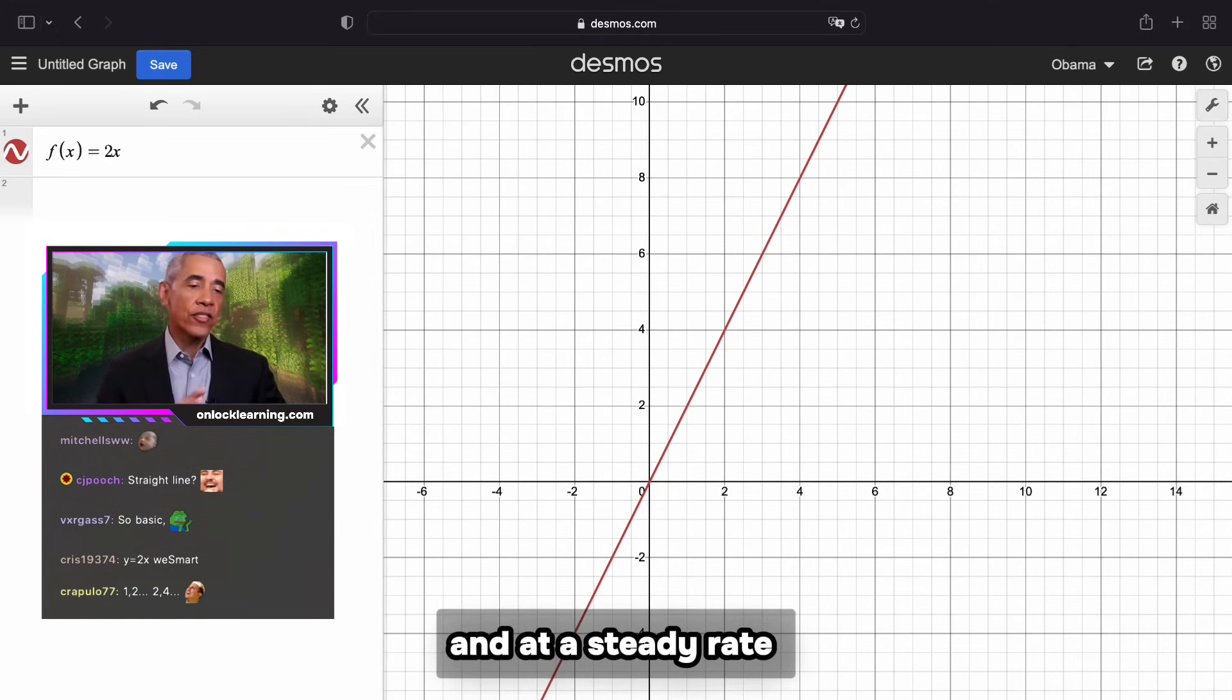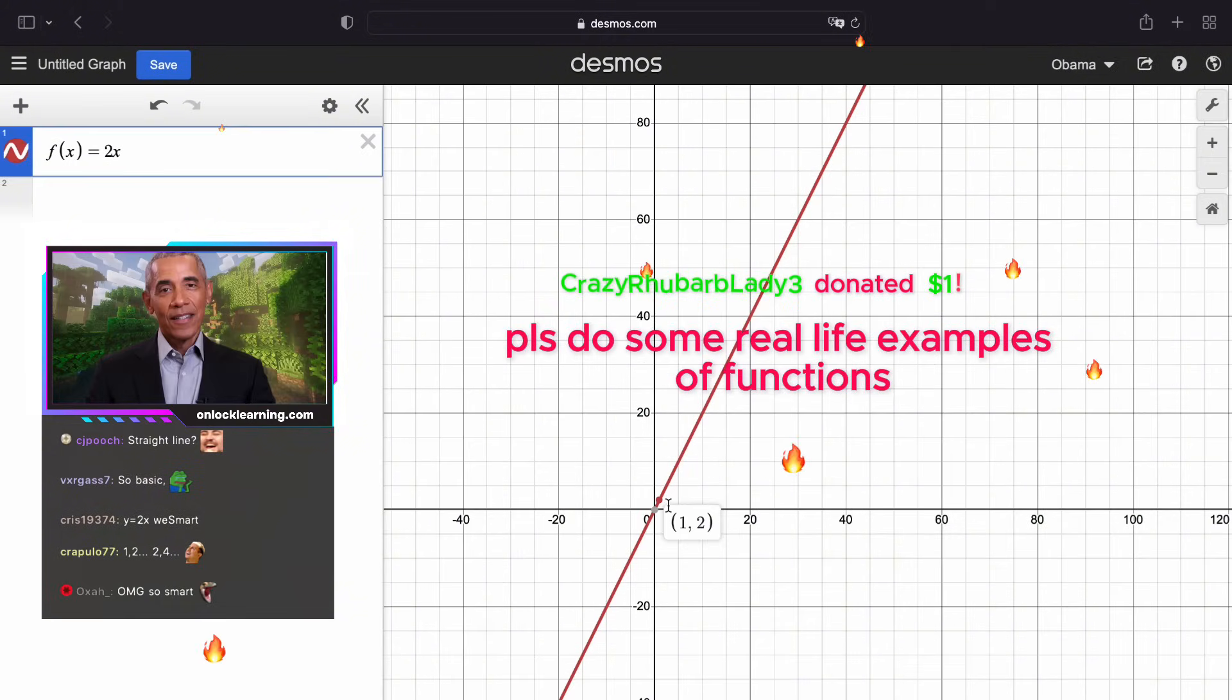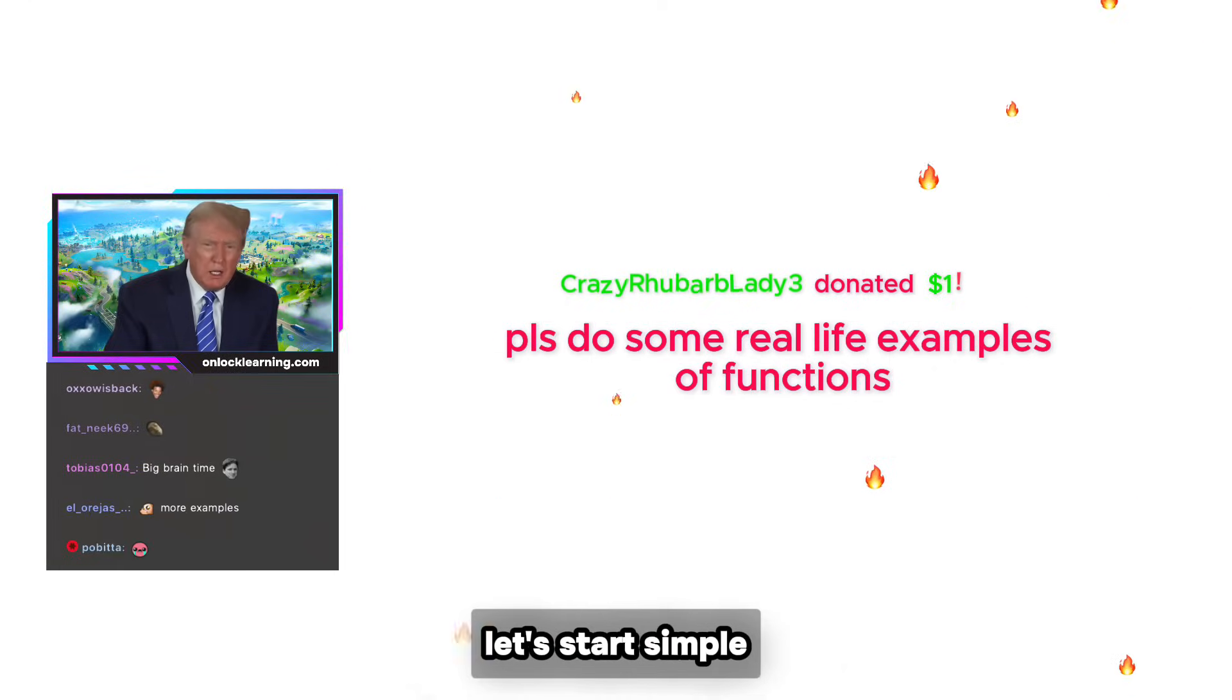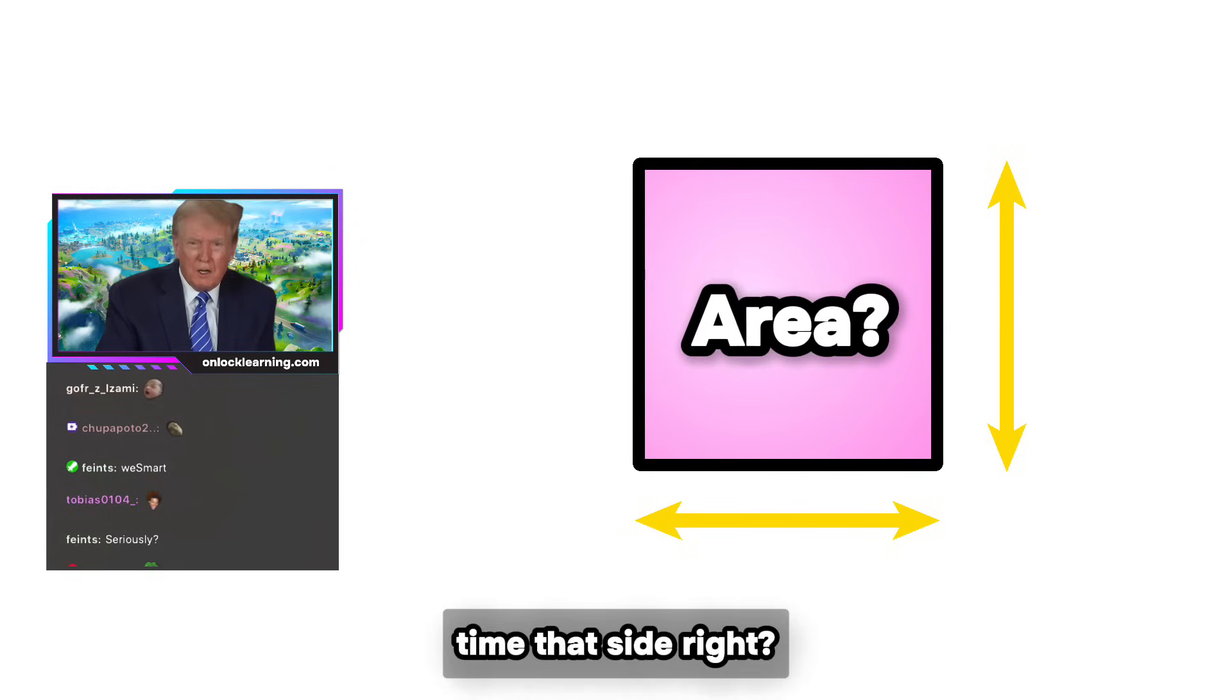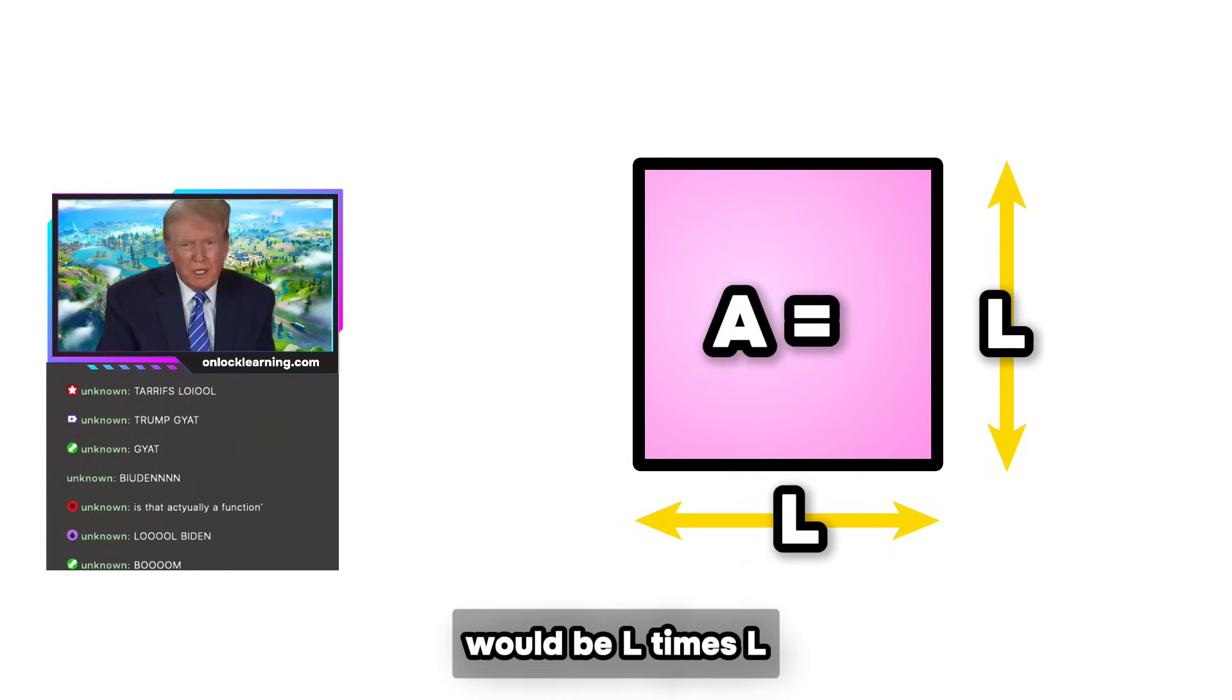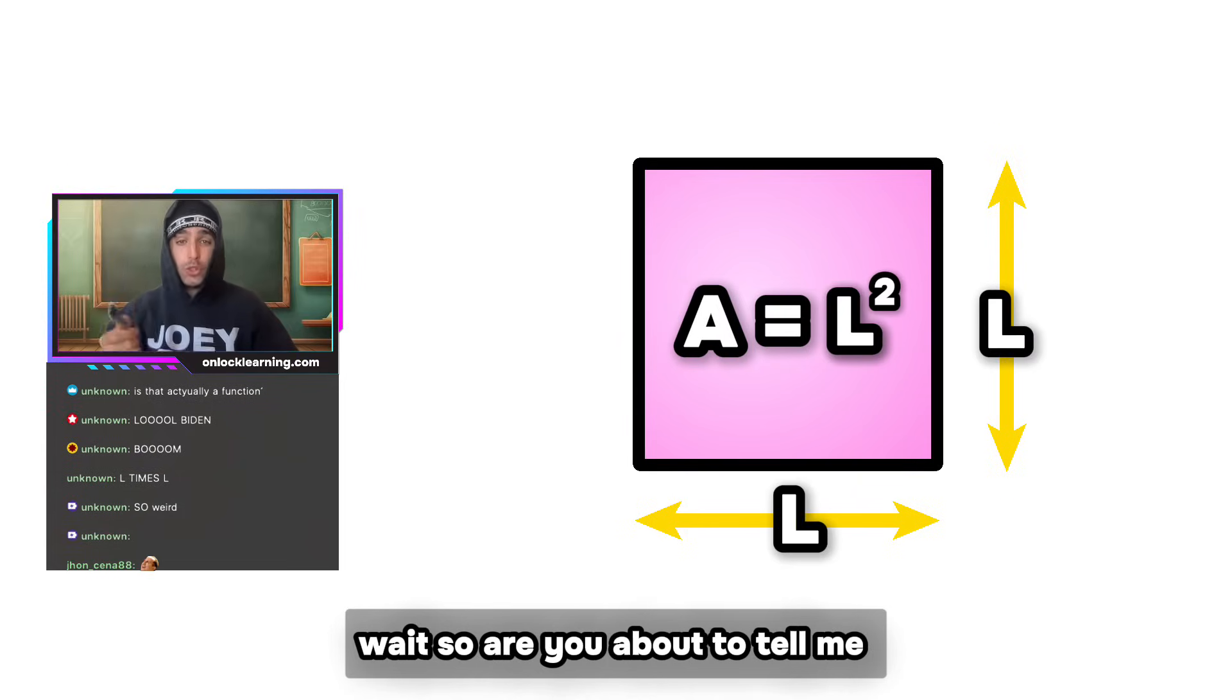Crazy. Rhubarb Lady 3 donated one dollar: Please do some real life examples of functions. Great idea Rhubarb Lady. Let's start simple. How do you find the area of this square? It's like this side of the square times that side, right? Right. So say we call the side's length L, the area A would be L times L—L squared. Wait, so are you about to tell me this is a function?